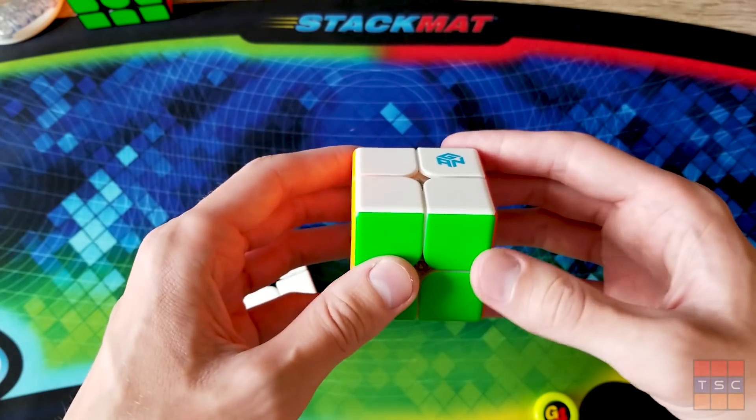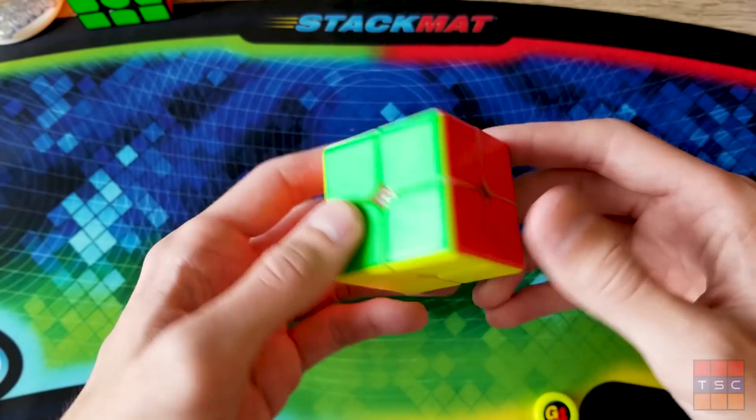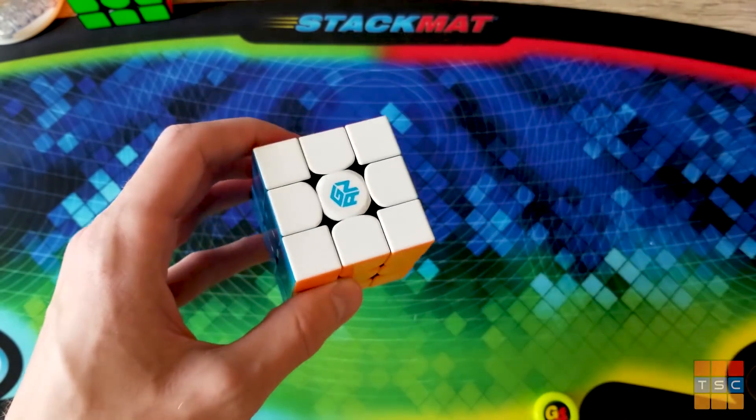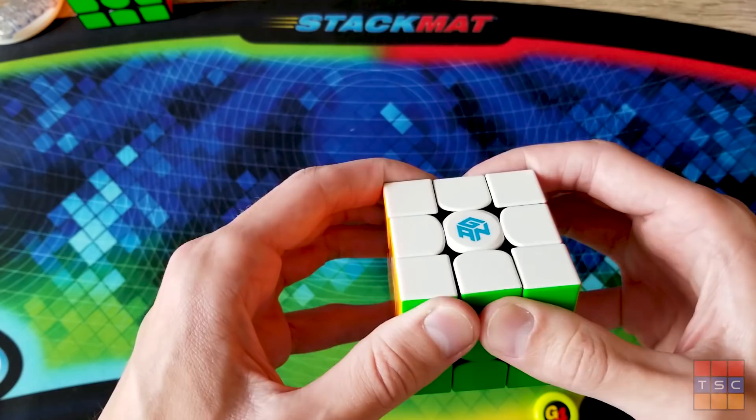I do have the stickerless 2x2 by GAN. And my only complaint about this is that the plastic is like a kind of frosted slippery plastic. And it's not a problem too much of the time, but every once in a while this will kind of slip out of my hand. I just was worried they might use the same for this. So I'm glad that they went to just normal plastic.